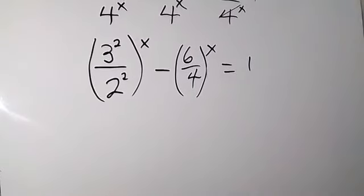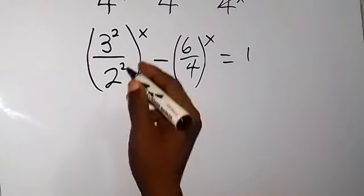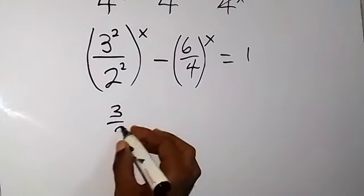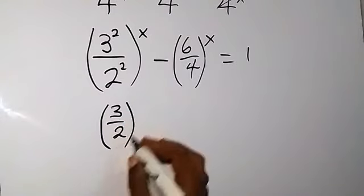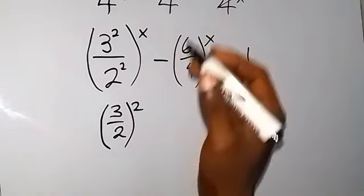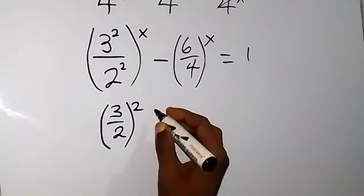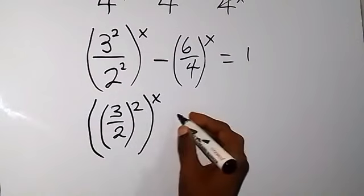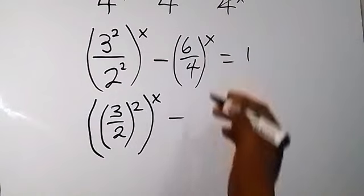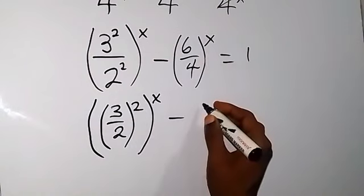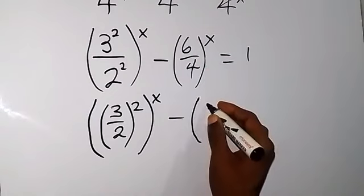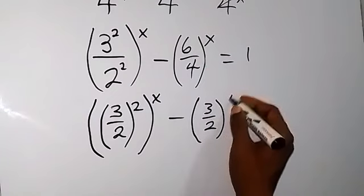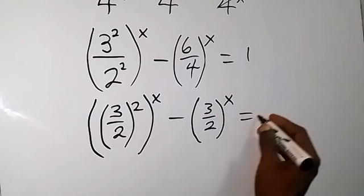From here we can see that this can be written as 3 over 2 raised to power 2. When we bring out the common power, then raised to power x, minus, we divide by 2 and we have 3 over 2 left, then raised to power x, equals to 1.